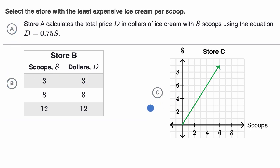All right, now let's go through these together. Choice A calculates the total price d in dollars of ice cream with s scoops using the equation d equals 0.75s. So whatever the number of scoops are, we're gonna multiply that times 75 cents, or 75 hundredths of a dollar, to get the price. And so based on the logic we just used in that last example...